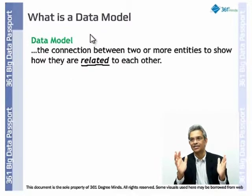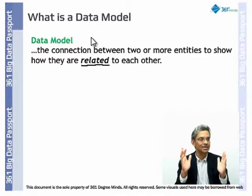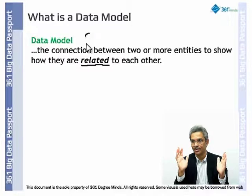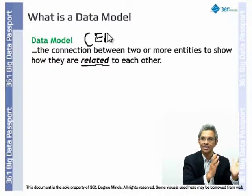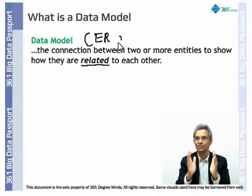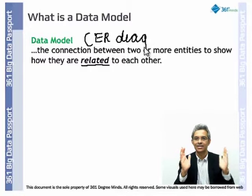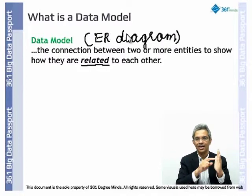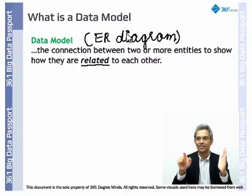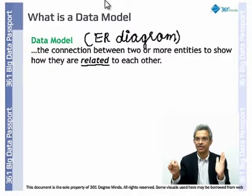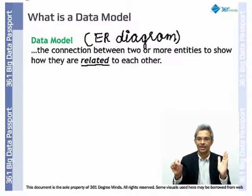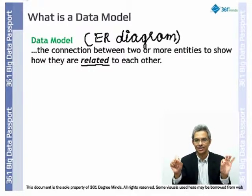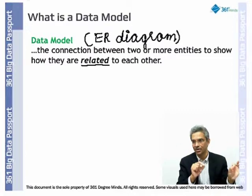The outcome of an entity relationship diagram is that we will have data models. It will have database 1, database 2, database 3, and it will say how these 3 databases are connected. It can actually represent the flow of information and relationships through primary, secondary, and tertiary keys — that is known as a data model.